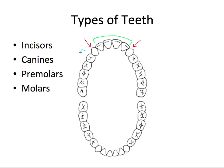The premolars are the next two teeth back from the canines, and they're useful for tearing, holding, and also grinding food. Finally, the back three teeth are referred to as the molars — the first, second, and third molars. The third molars are usually referred to as the wisdom teeth. The premolars and molars combined are referred to as the posterior teeth because they're located in the back.